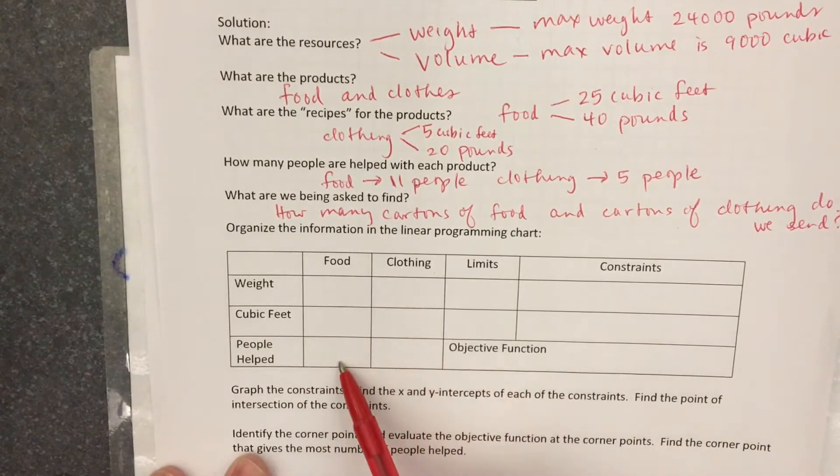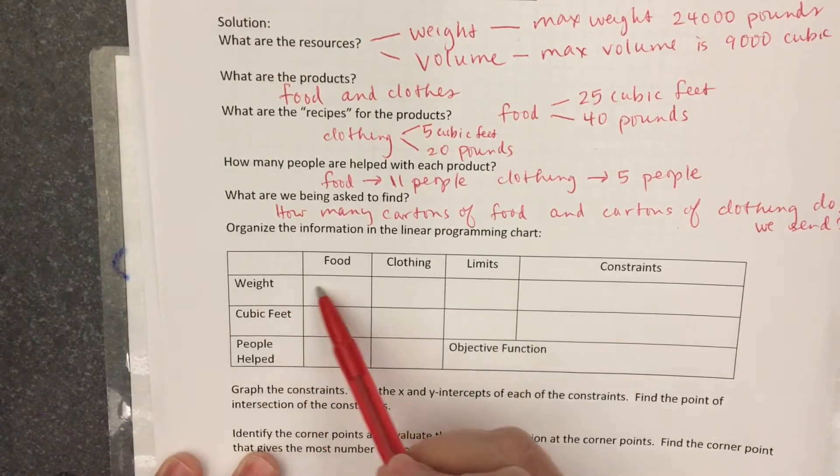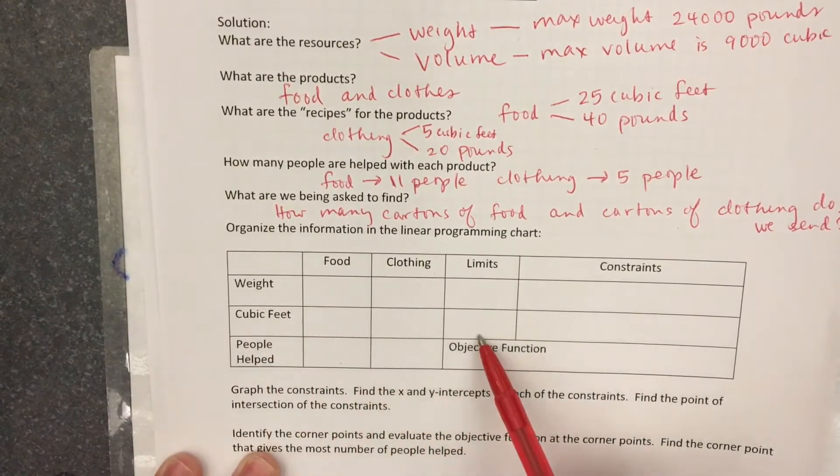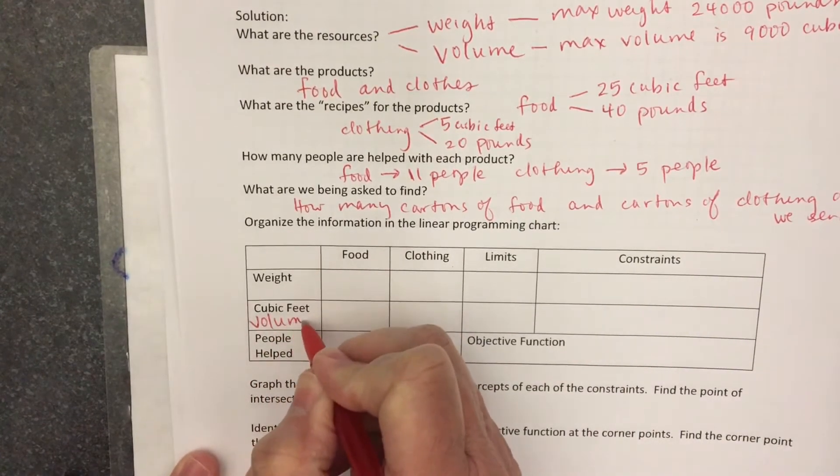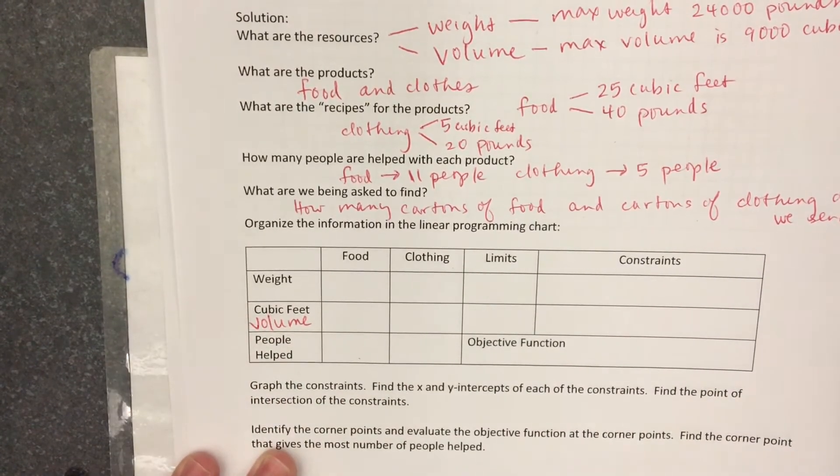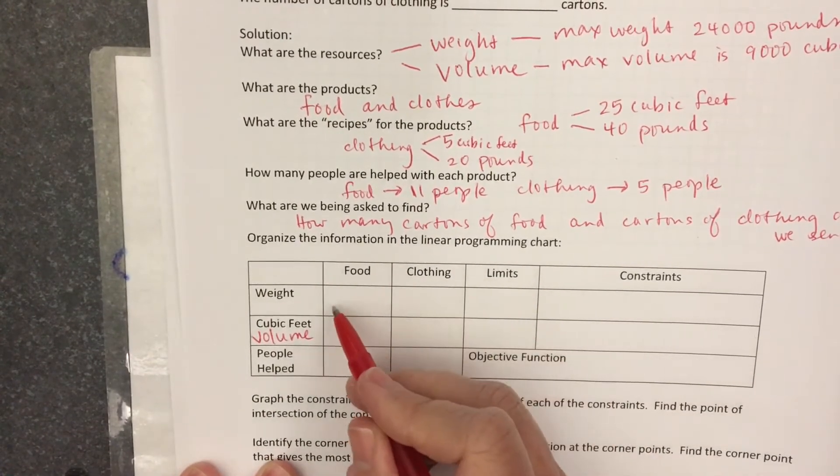Here I have a column for food and a column for clothing. I have a row for weight, a row for cubic feet. The cubic feet, that's the volume in each carton of food. This is your recipes right here.